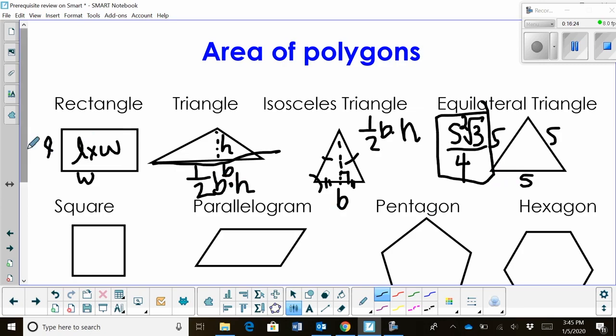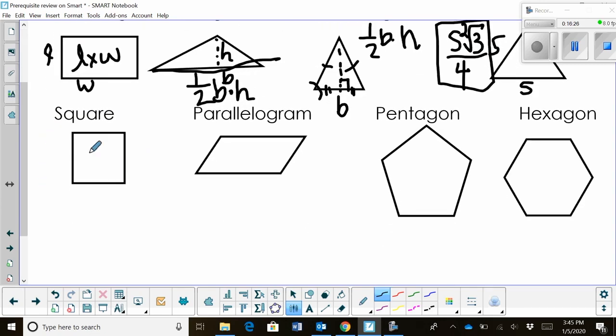For a square, it's easy: it's just side squared. Now sometimes you have to use the fact that you have a 45-45-90. If you're given your diagonal, you're going to have to use your 45-45-90 rules to work backwards to the side to then find the area.